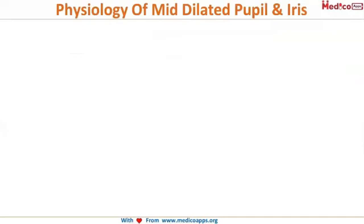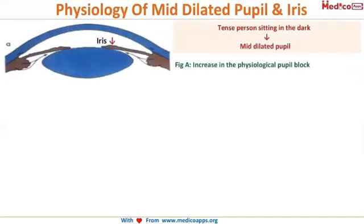Now let's see the physiology of pupillary block and how it causes a rise in the intraocular pressure. The main thing is that the pupil is dilated in this condition. The pupil dilates when there is a reduction in the brightness of light. So when a tense, anxious, or emotionally unstable person is sitting in the dark, the pupil is mid-dilated, and there is an increase in the physiological pupil block.